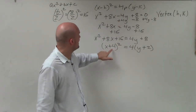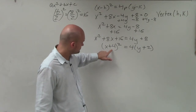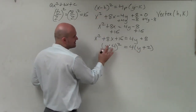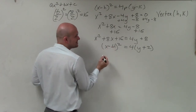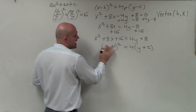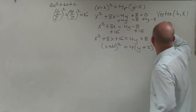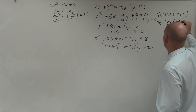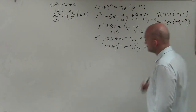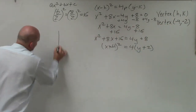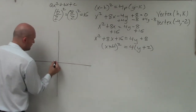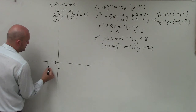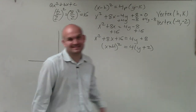Now I can identify the vertex as negative 4 and negative 2, because x minus a negative 4 is the same as adding. So my vertex is (negative 4, negative 2). I'll go ahead and plot that point — over to negative 4, down to negative 2 — and label it V for vertex.